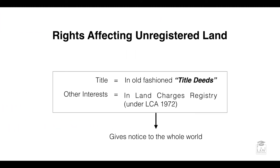There are several types of rights that affect land. We considered earlier that proprietary rights can exist either as estates or interests. In the context of unregistered land, the title or the ownership of the land itself is found in old-fashioned title deeds, whereas in registered land you can find it in the land registry. In terms of other interests in land — the rights that others will enjoy over your land — you can find those in the Land Charges Registry, which is established under the Land Charges Act of 1972.